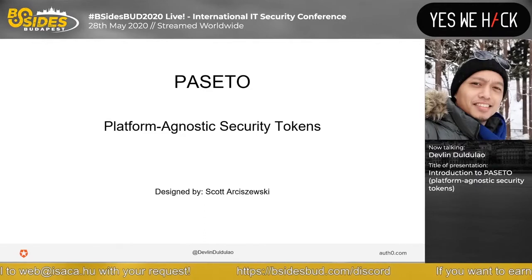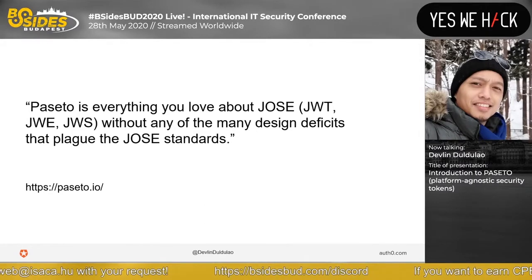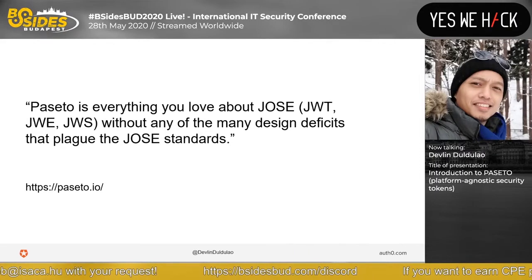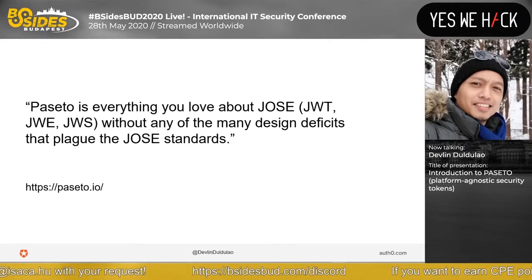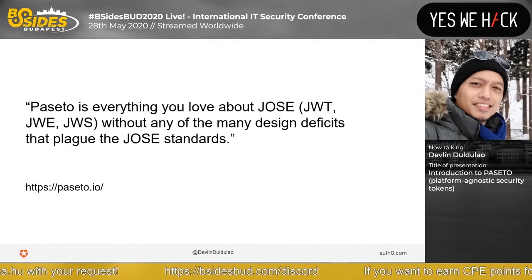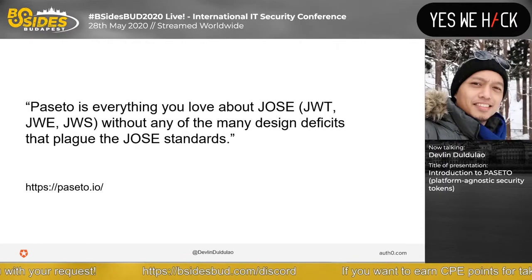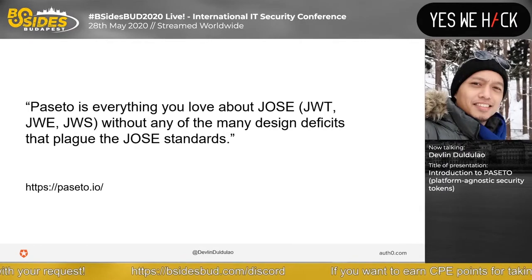Now we have PASETO — Platform Agnostic Security Tokens. PASETO is everything you love about JWT, JWE, and JWS, without any of the many design deficits that plague the JOSE standards. That's a good definition from the PASETO website.